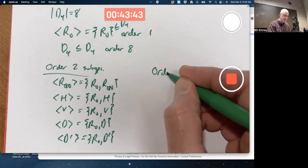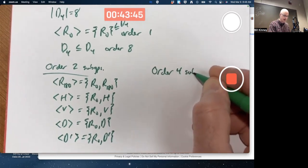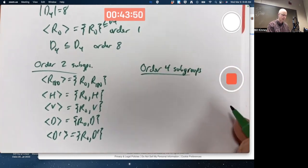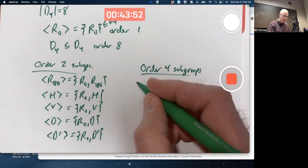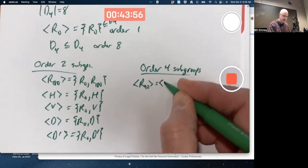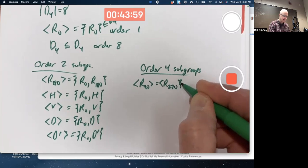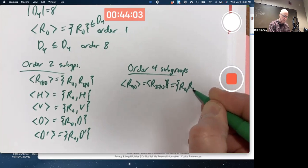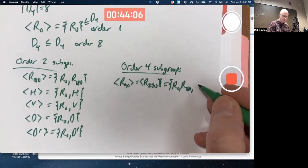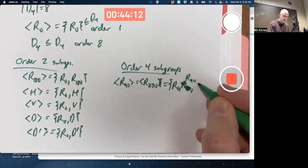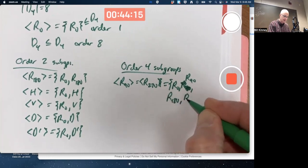There are also some order 4 subgroups, and in fact more than one of them. We talked about this a couple weeks ago. There is a cyclic one, the one generated by R90, which is the same as the one generated by R270, which includes all the rotations: R0, R90, R180, R270.